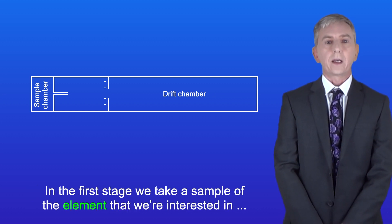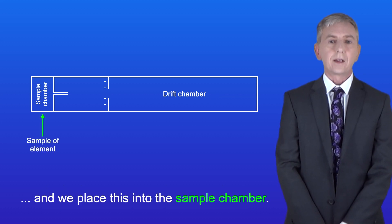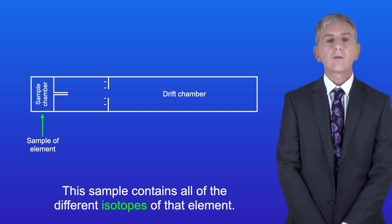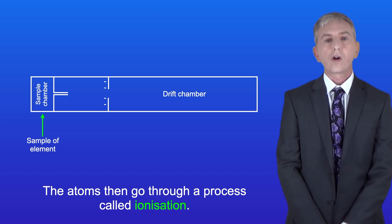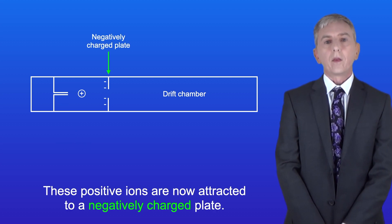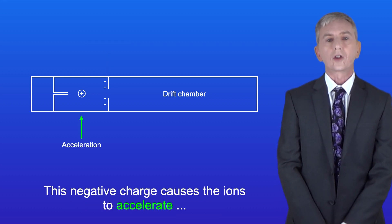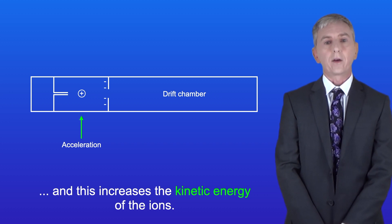In the first stage we take a sample of the element that we're interested in and we place this into the sample chamber. This sample contains all of the different isotopes of that element. The atoms then go through a process called ionization and this converts all of the atoms into positive ions. These positive ions are now attracted to a negatively charged plate, which causes the ions to accelerate and increases their kinetic energy.